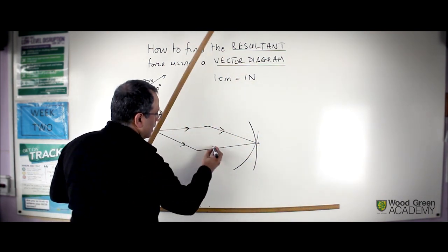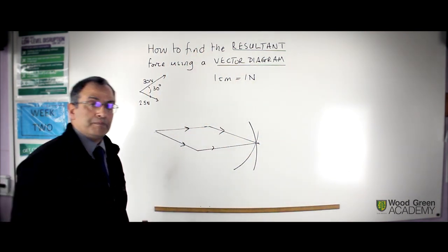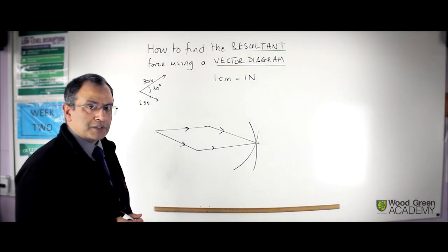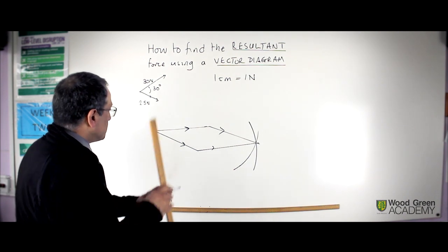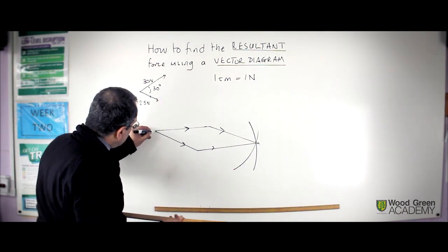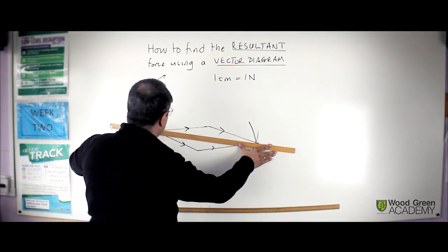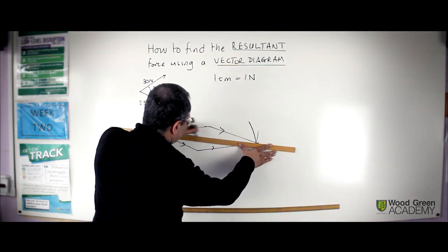There we go. And what you notice is that you've got a parallelogram. And this is called a parallelogram of forces. How do you get the answer to the result? Well, this is your resultant. From there to there, measure the length. Let's just draw that in. And you have your resultant.